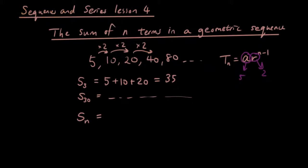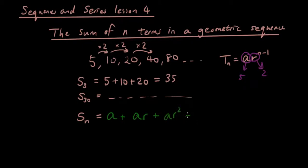Let's go back to our formula writing. So the first number is a, the second number is going to be a times r, the third number 20 is going to be a times r squared, and we're going to have a times r cubed and so on, all the way to a times r to the power of n minus 1. That will be the formula for the sum of all the terms in our geometric sequence up to the nth term.